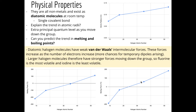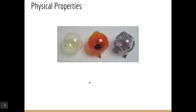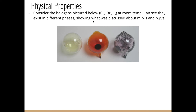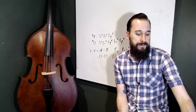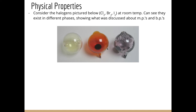An interesting feature of the halogens is that at room temperature — roughly 20–30°C — they exist in different phases. Chlorine is a gas, bromine is a liquid, and iodine is a solid. Bromine is notable as one of only two elements that are liquid at room temperature, the other being mercury. They also have vastly different colors that get darker going down the group: chlorine is light green, bromine is red-brown, and iodine produces a purple vapor and purple solid.